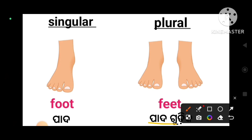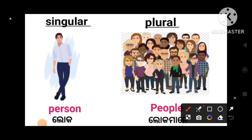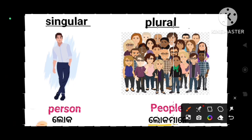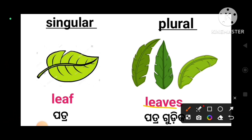Feet means more than one foot. Next: person. Person means one person (lok). The plural form of person is people. People always remains plural — you cannot add S to make 'peoples.' Person's plural form is people. Next: leaf. Leaf means one leaf (patra). The plural form of leaf is leaves.